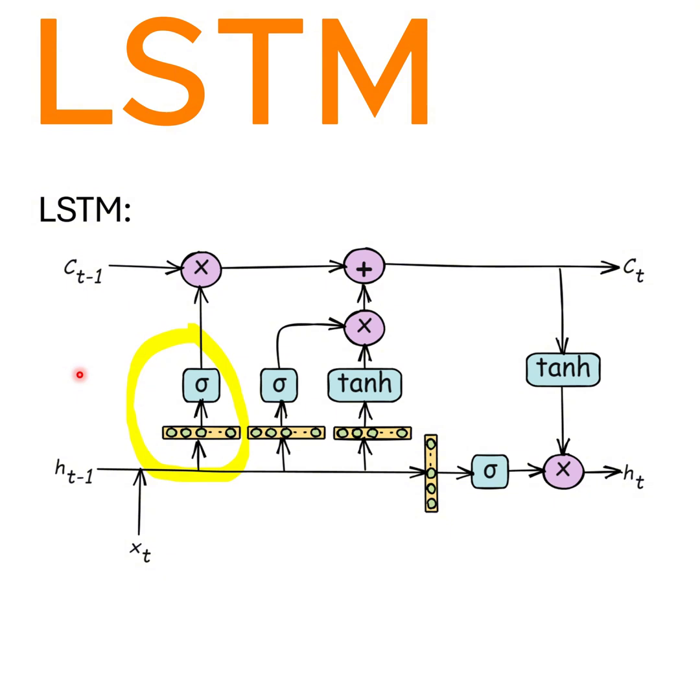This is the input gate. It determines how much of the new information should be added to the cell state. This is the output gate. It decides how much of the updated cell state should be used as an output.